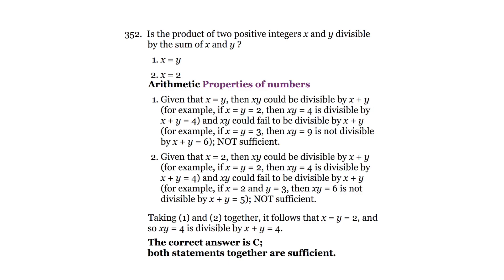Now here's a data sufficiency problem from the 2020 official guide. Have you ever noticed that the explanation writers always seem to know exactly which numbers to pick? The problem is that we don't. The explanation proves that the answer is C, but it doesn't tell us the best way to tackle this problem from scratch.